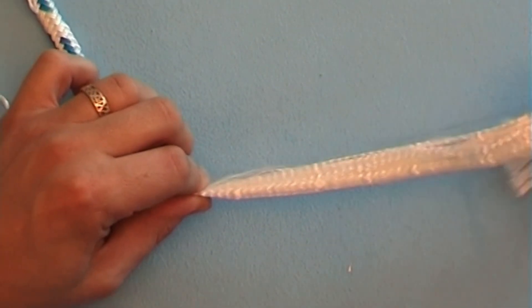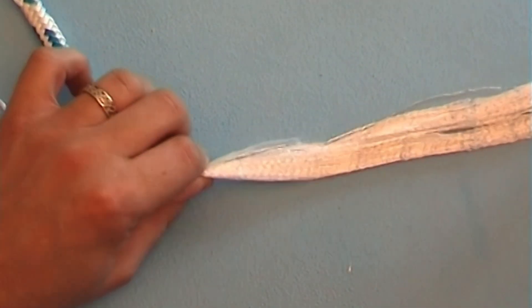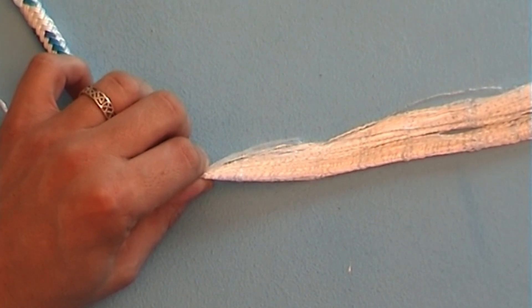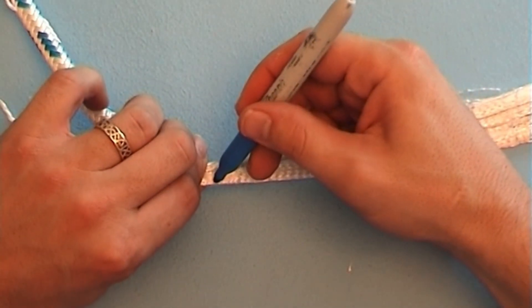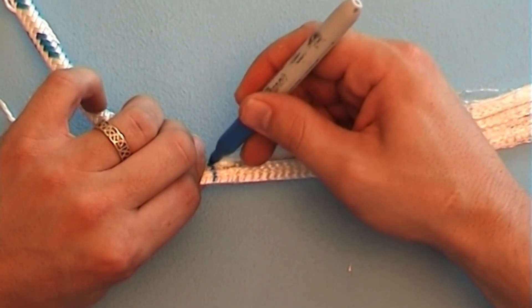From the spot you are holding, measure about 10 times the rope diameter away from the core end for the core shortening. And mark this new spot with a felt-tip pen.